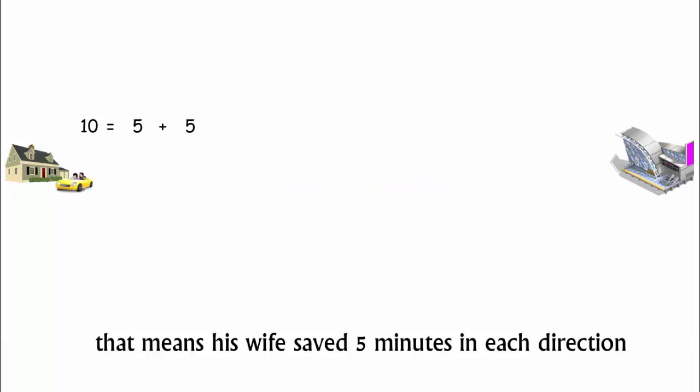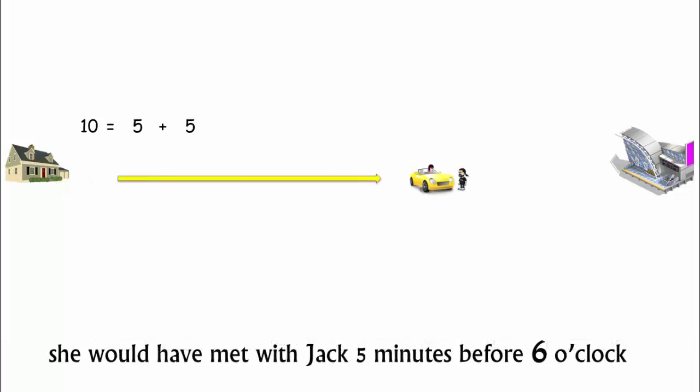With this calculation, she would have met with Jack 5 minutes before her usual time of reaching station. That is 6 o'clock. So, she met with Jack at 5 minutes to 6.